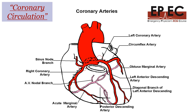If we follow the right main coronary, we'll notice that it moves to supply the inferior wall of the heart via the acute marginal artery, and then it turns around to supply the right ventricle and the posterior wall of the heart via the posterior descending artery.